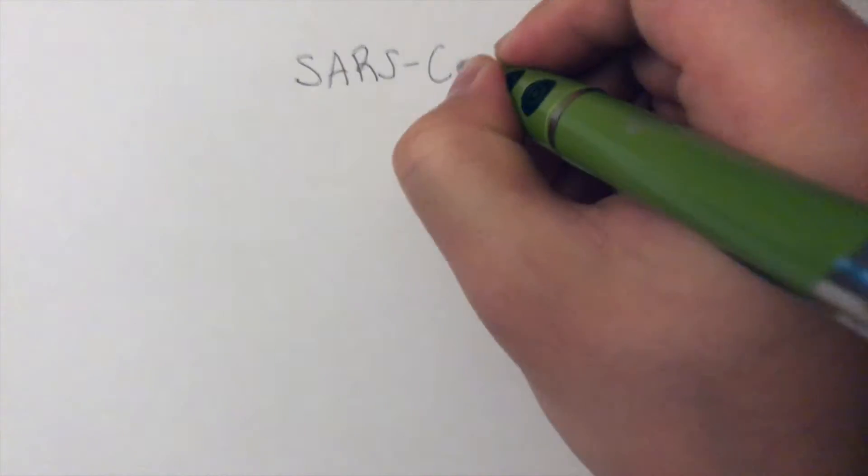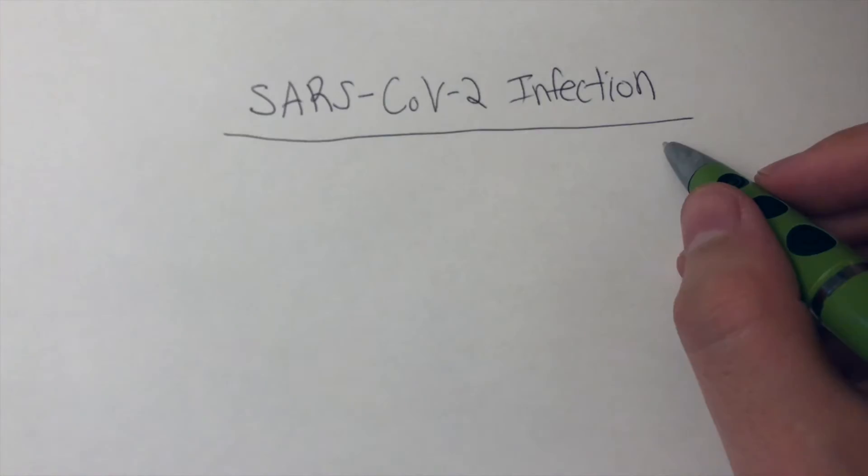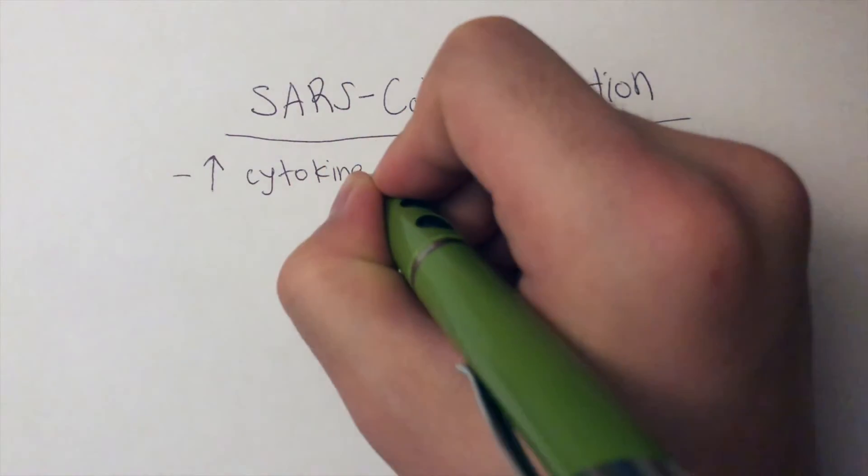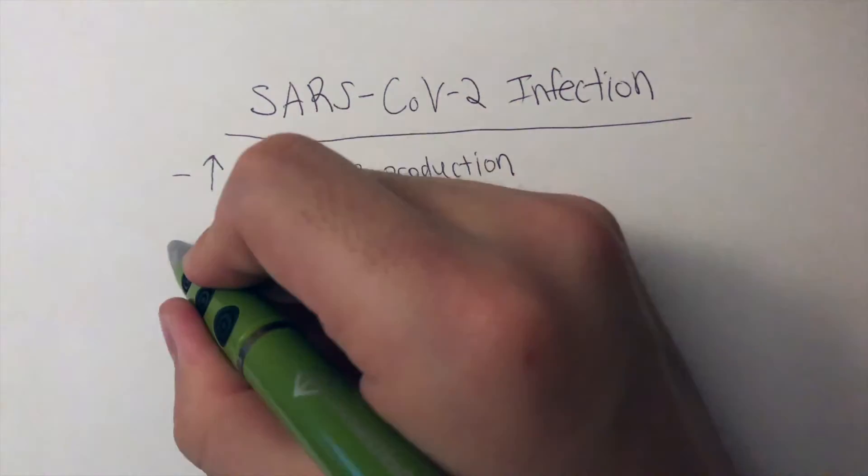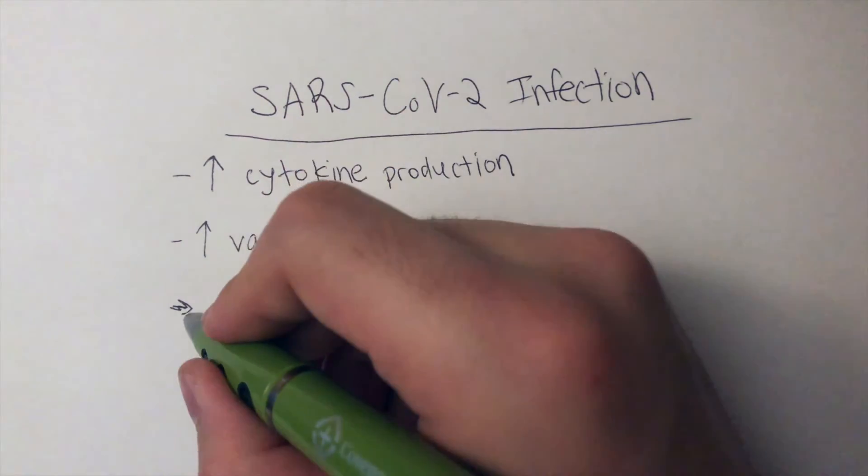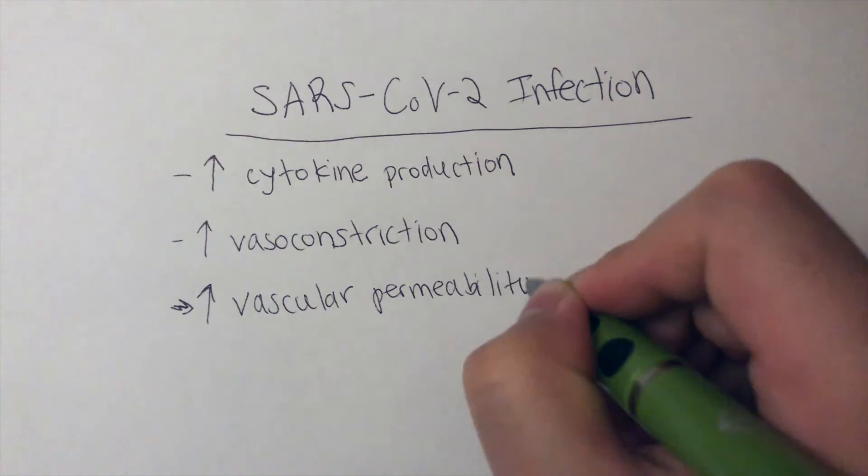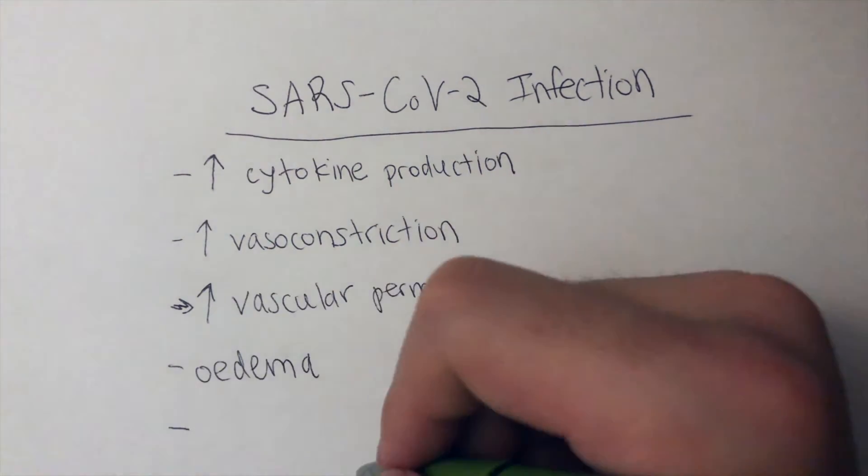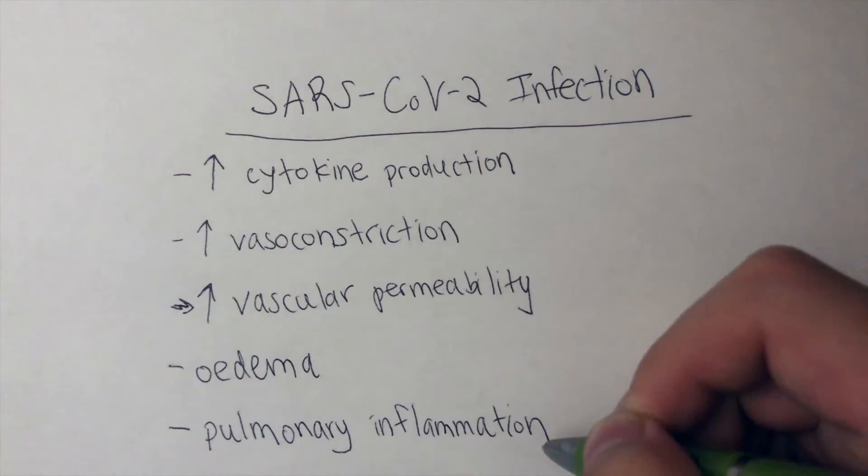ACE2 levels are reduced once SARS-CoV-2 infects the host cells, which can cause increased pro-inflammatory cytokine production, increased vasoconstriction, increased vascular permeability, edema, and lung injury. Furthermore, pulmonary inflammation increases and acute severe respiratory failure may ensue.